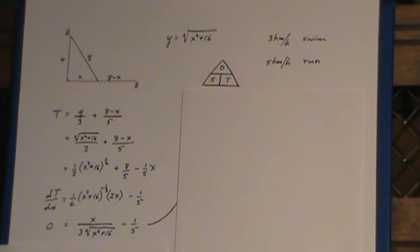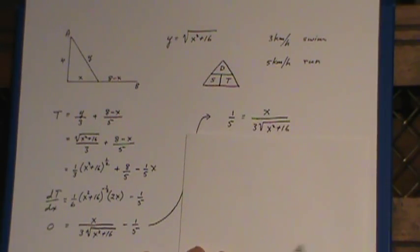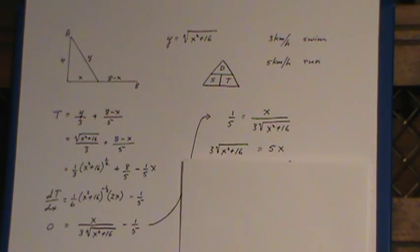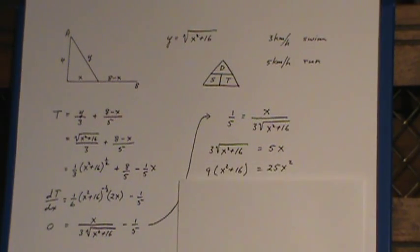Again, tidy it up as much as you can. 2 divides into the 6 3 times. X remains on top. And there's my root on the bottom. And once again, I'm going to move that minus 1 fifth to the other side. Cross multiply. So I've got 3 times the root equal to 5X. And again, square both sides. Exactly the same as before. And solve a very simple equation. And once again, the answer is X equals 3.